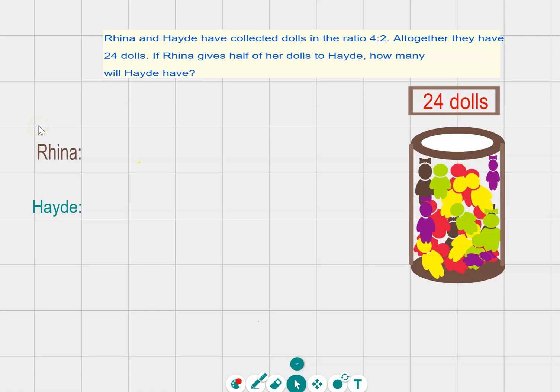This is a video on solving a ratio problem using double-sided counters. The problem states that Rina and Heidi have collected dolls in the ratio 4 is to 2. Altogether they have 24 dolls.